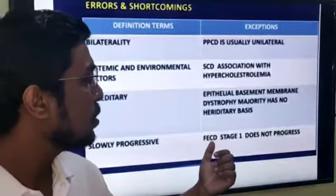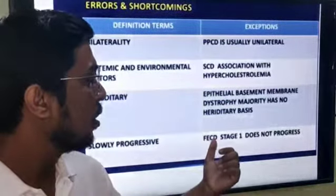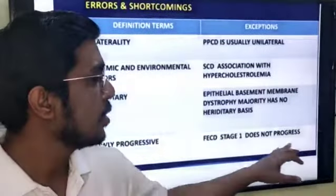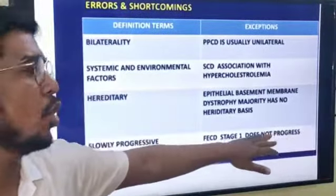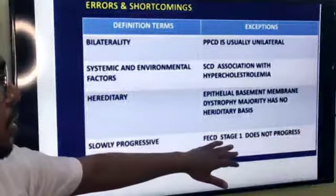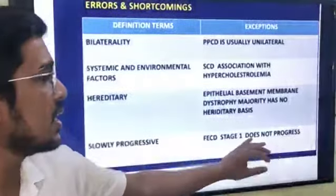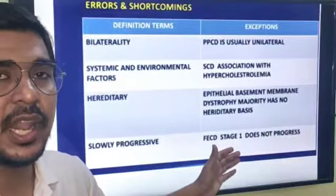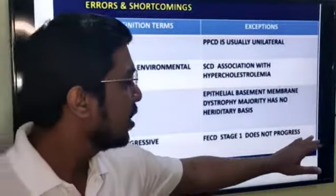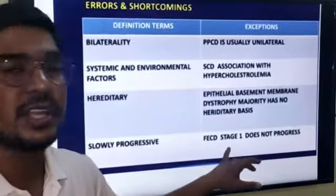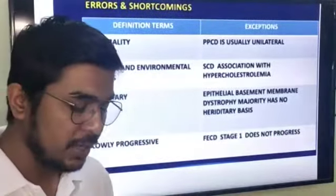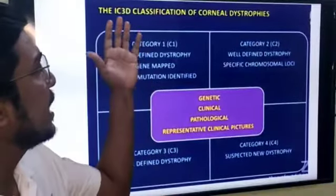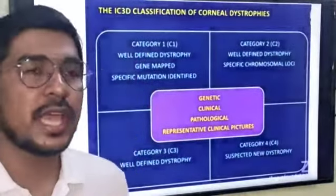Regarding slow progression: corneal dystrophies are generally slowly progressive, but Fuchs Endothelial Corneal Dystrophy in Stage 1 does not progress at all. Because of this lack of progression, the name of this condition has been changed — we will discuss that separately.